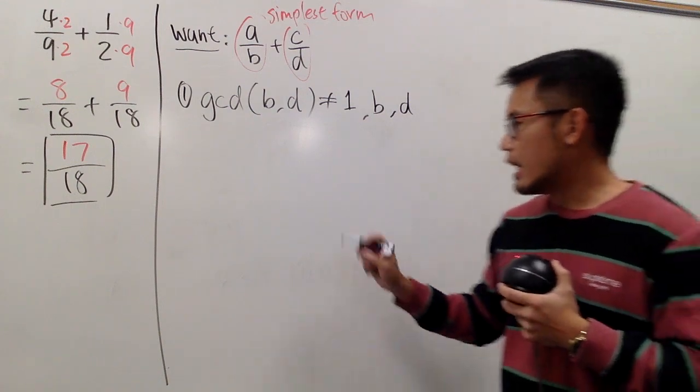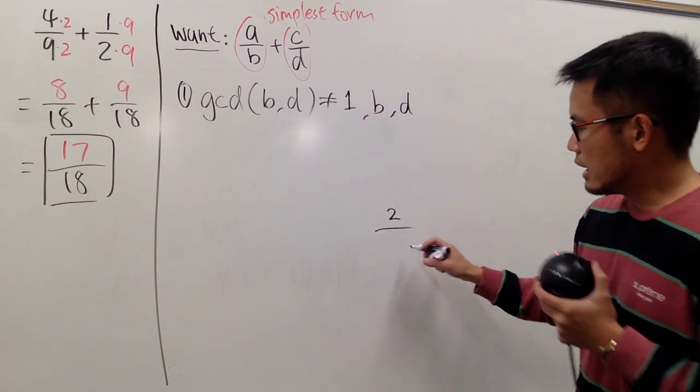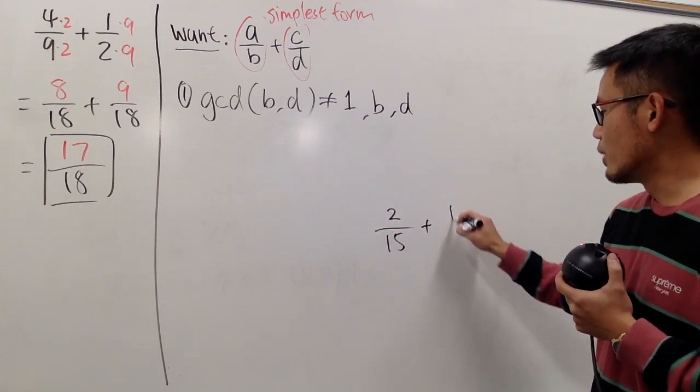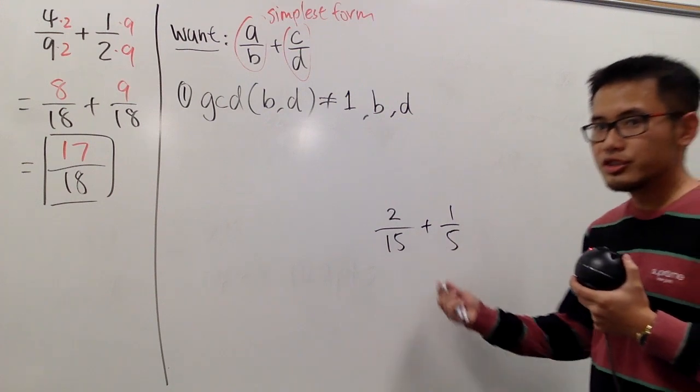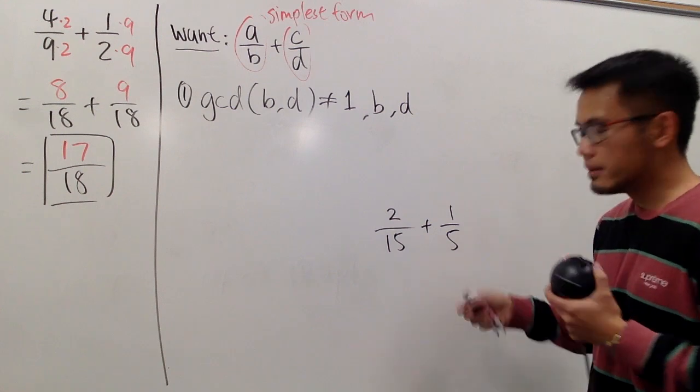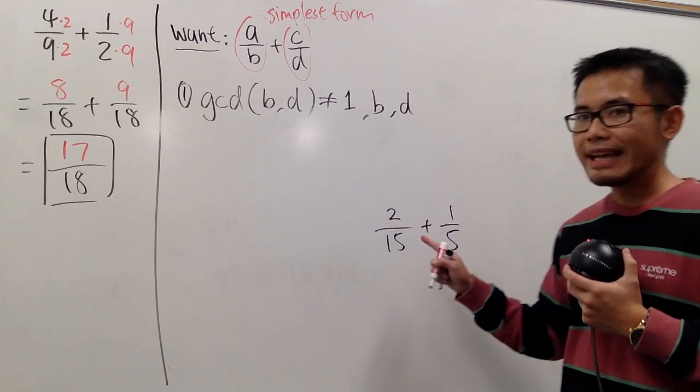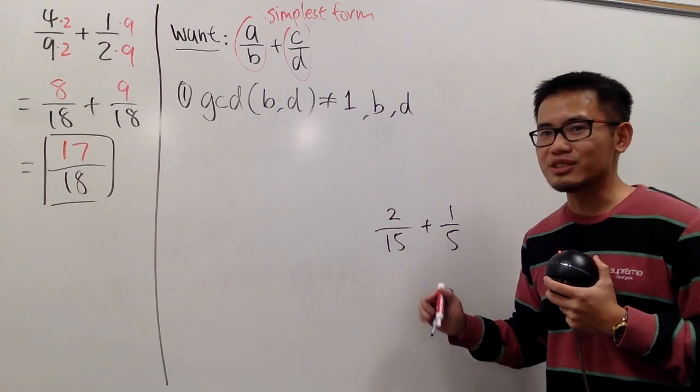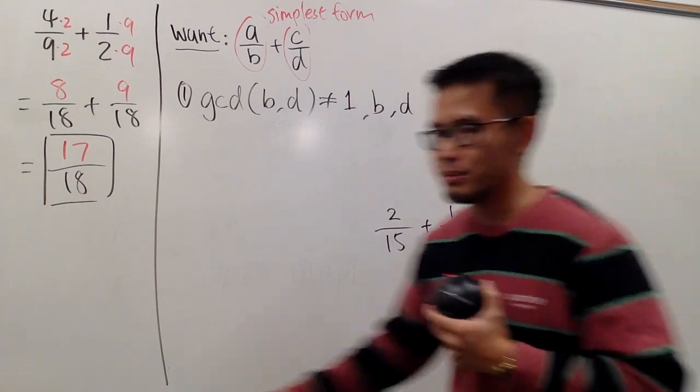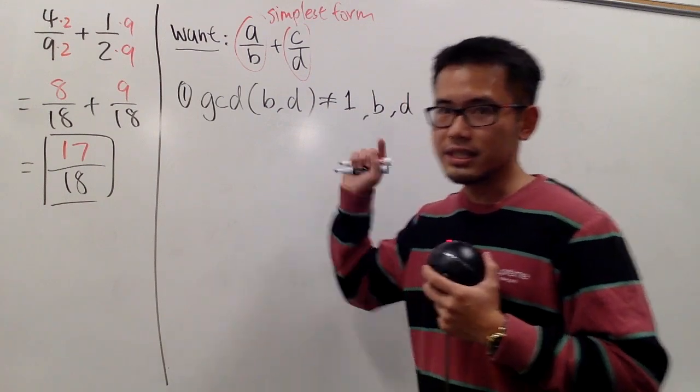So what do I mean by that? I don't want a fraction to be something like this, like say, 2 over 15 and plus 1 over 5. Well, the gcd of 15 and 5 is exactly 5. So in my opinion, it's boring because I can just multiply the second fraction by 3, and I don't need to do anything with the first fraction. So that missed out the chance to make the students do more work. So I don't like this neither. So this is the first condition.